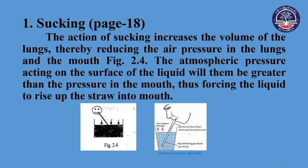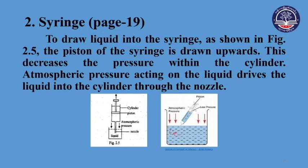The atmospheric pressure acting on the surface of the liquid will then be greater than the pressure in the lungs, forcing the liquid to rise up the straw into the mouth. Similarly, the piston of a syringe is drawn back to decrease the pressure within the syringe, and atmospheric pressure acting on the liquid drags it into the syringe through the nozzle.